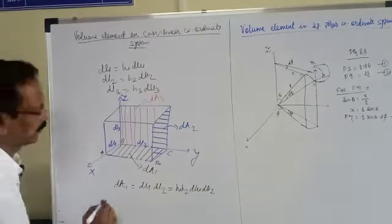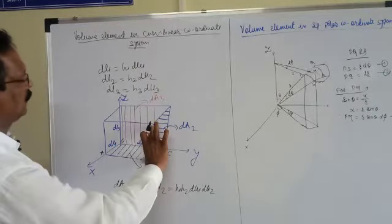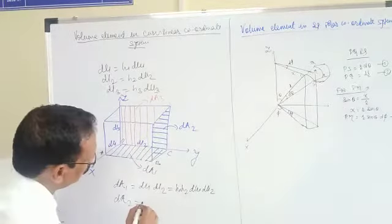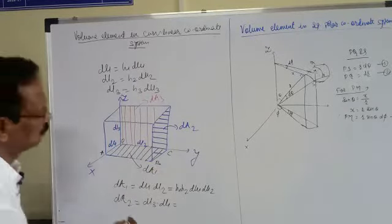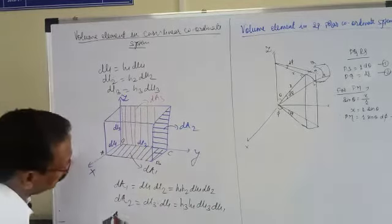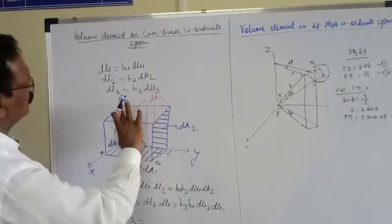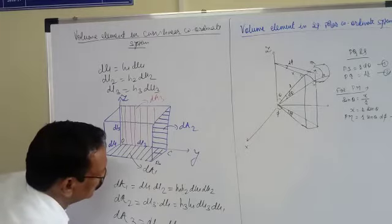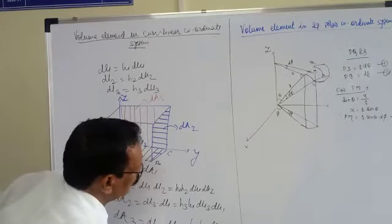Similarly, we calculate dA2. dA2 is equal to dL3 times dL1, which gives h3·h1·dU3·dU1. And dA3 is the area shown by the red portion: dA3 = dL2 times dL3, which equals h2·h3·dU2·dU3. So these are all the area elements.